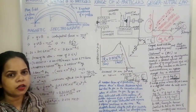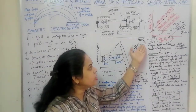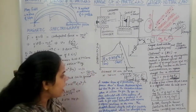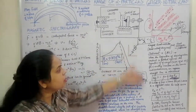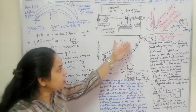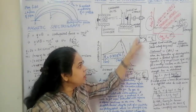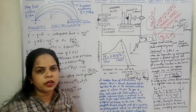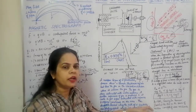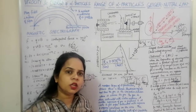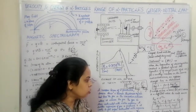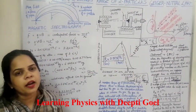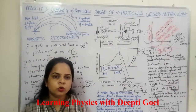Thus the Geiger-Nuttall law confirms that longest-lived nuclides emit the least energetic alpha particles, while shortest-lived nuclides emit the highest energetic alpha particles. This theoretical law was subsequently proved in 1928 by Gurney and Gamow using wave mechanics (quantum mechanics), which provided a quantum mechanical verification of the Geiger-Nuttall law. Thank you.